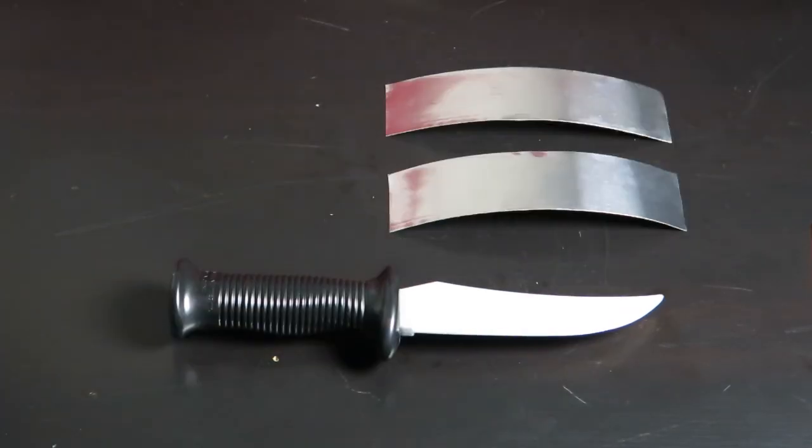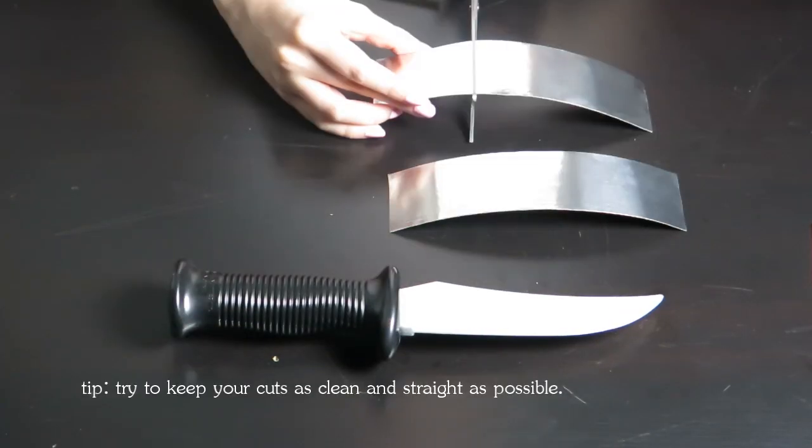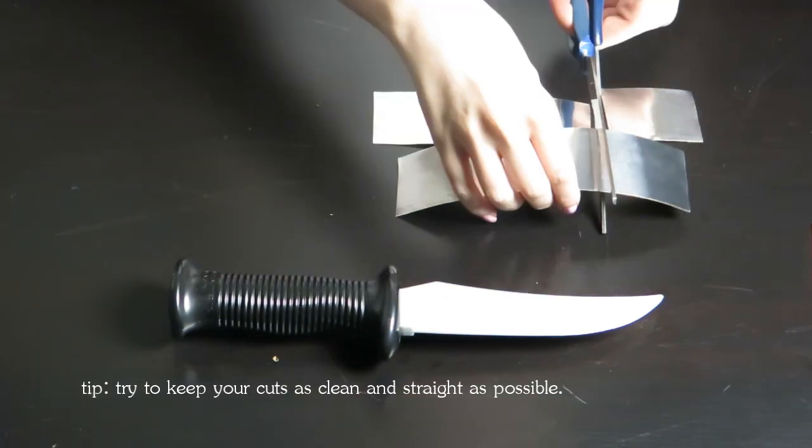Cut two strips of tape to fit the length of the blade you're working with. Then carefully cut the tape into smaller pieces.